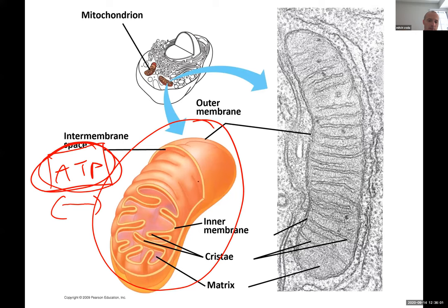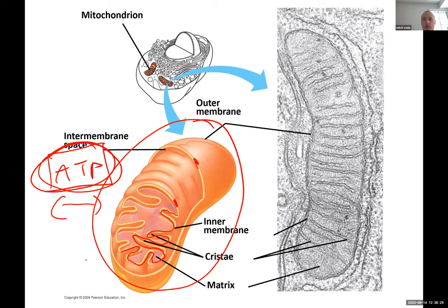Mitochondria are made up of two membranes: the outer and the inner membrane. The inner membrane has foldings called cristae — you can see how many foldings there are. Why are those foldings there? Because they increase surface area, which we'll learn is important during cellular respiration.